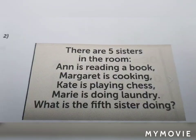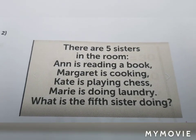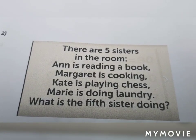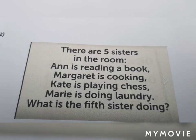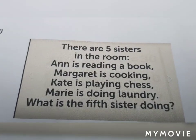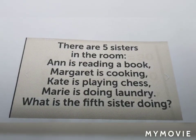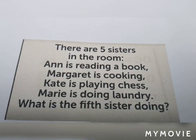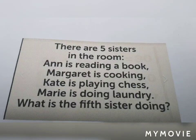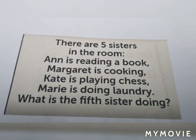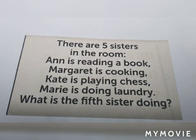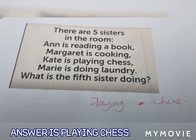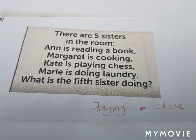Magic number two: there are five sisters in the room. One is reading a book, Margaret is cooking, Kate is playing chess, Marie is doing laundry. Question: what is the fifth sister doing? Since chess requires two persons, Kate and the fifth sister are playing chess together. Therefore the answer is: the fifth sister is playing chess.